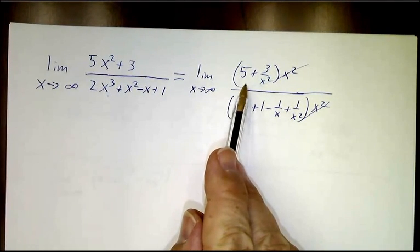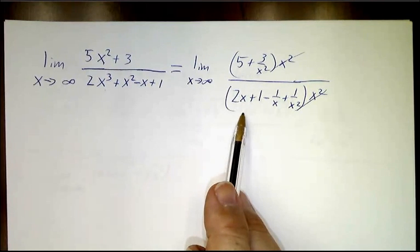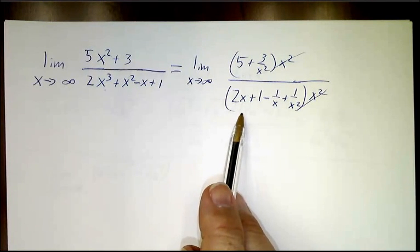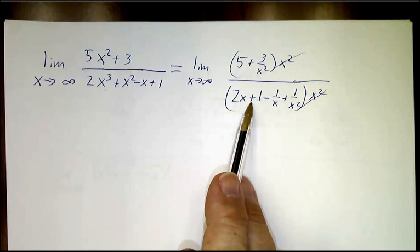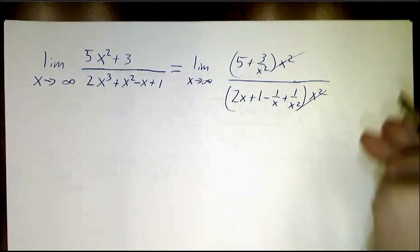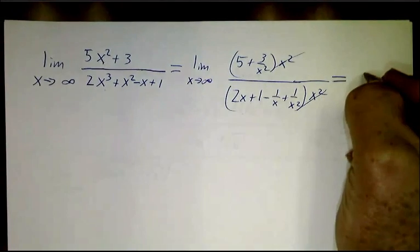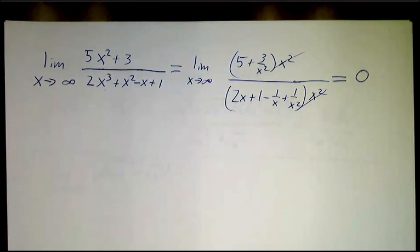The top gets closer and closer to 5, but the bottom is still growing. If you imagine plugging in a gigantic number for x, you get something close to 5 divided by a gigantic number. And that gives you a tiny number. The limit is 0.